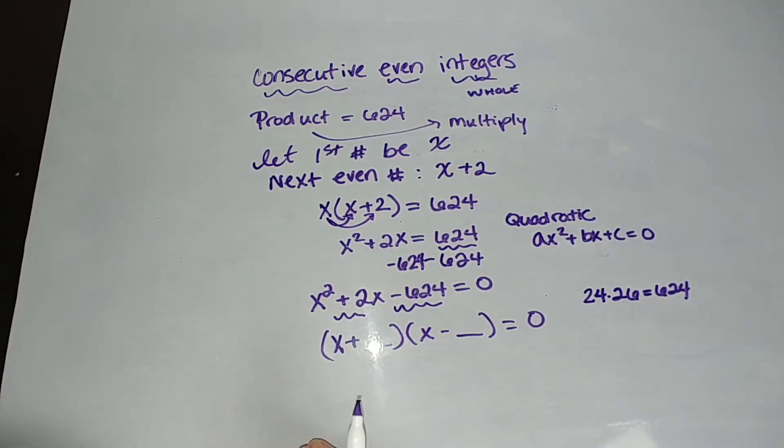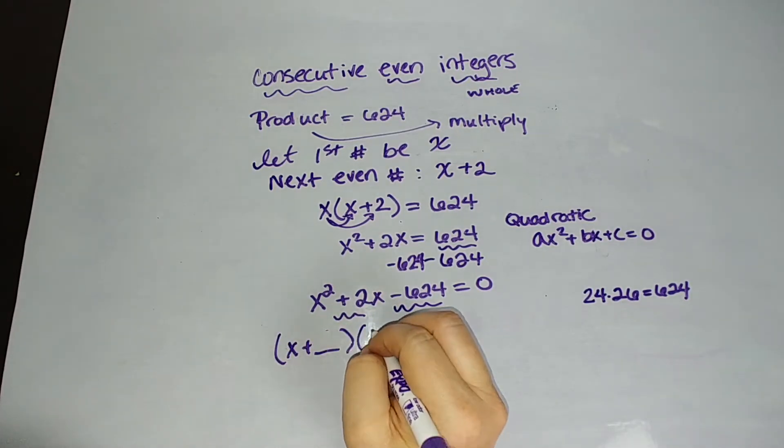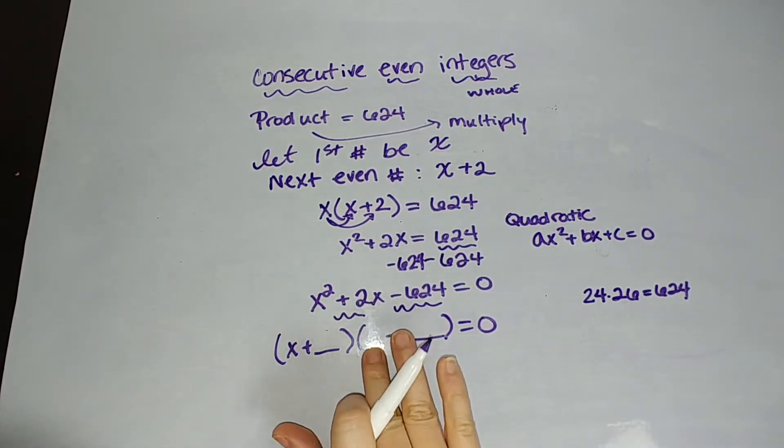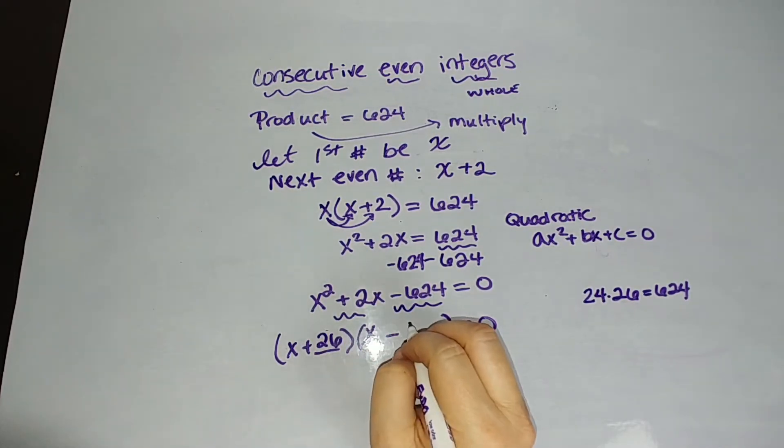All right, so which one of those, and there's that wicked glare. I'm going to try and move this over. Okay, well, good. Now it's on my x. Okay, so which one of those can be positive? It has to be the larger. So it's going to be 26 and then minus 24.